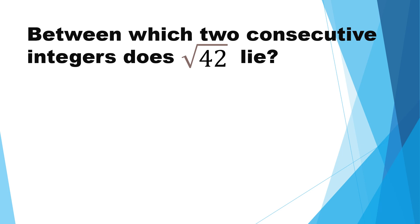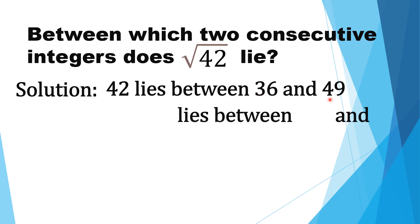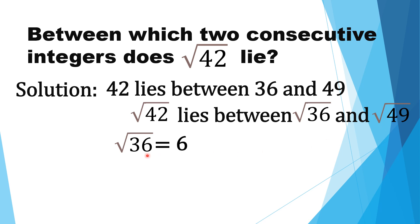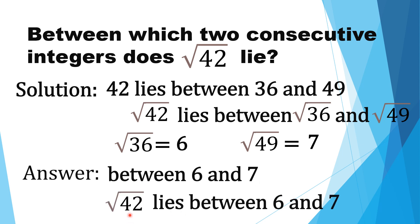Between which two consecutive integers does the square root of 42 lie? Square root of 42 lies between square root of 36 and square root of 49. Square root of 36 is equal to 6, and square root of 49 is equal to 7. Thus, square root of 42 lies between 6 and 7.